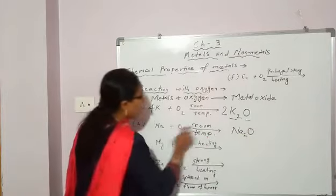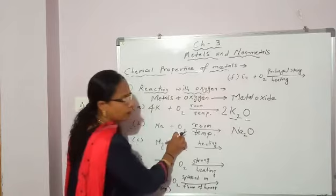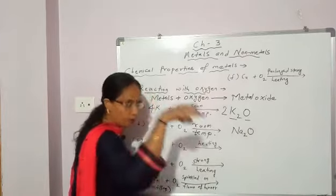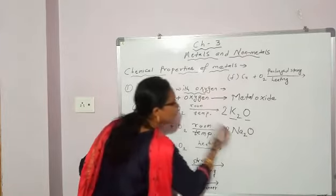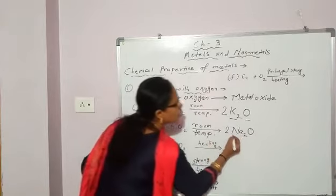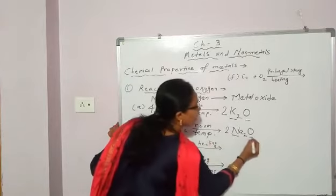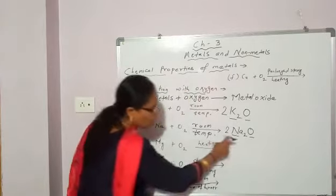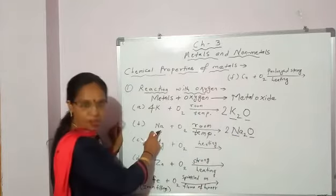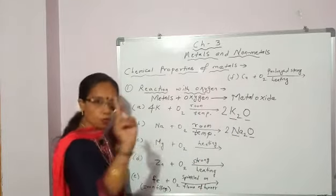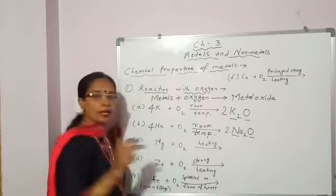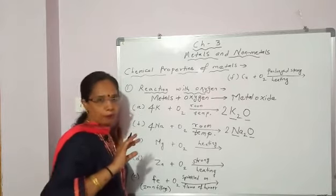Again, how many oxygen atoms here? 2. This side: 1. You have to make it 2, so in front of the formula you will add 2. Now this 2 is for sodium as well as oxygen. Sodium becomes 2, so 2 twos are 4. In the reactant side there is 1, you will make it 4 by adding 4 in front of the formula.